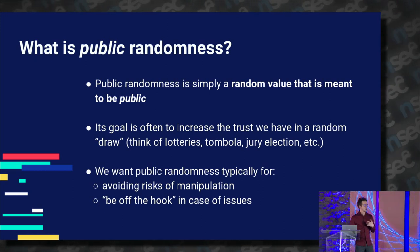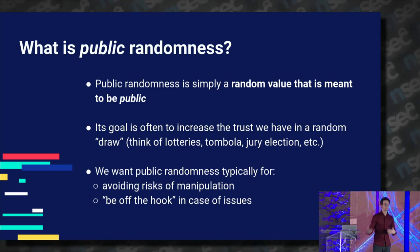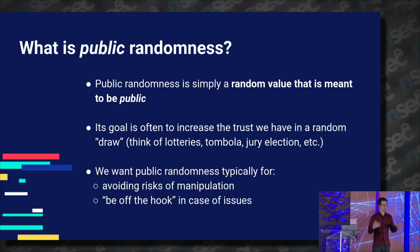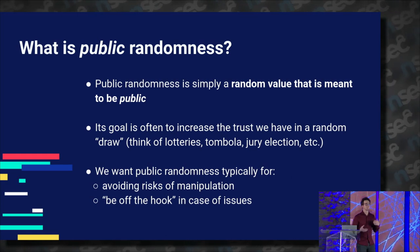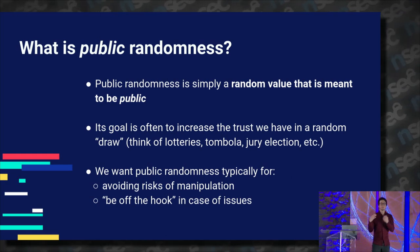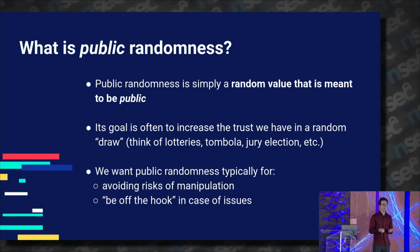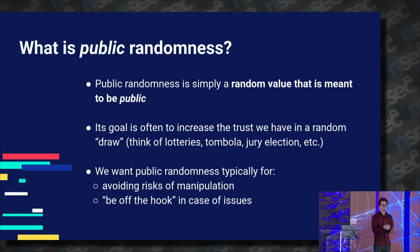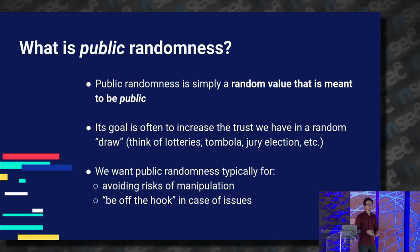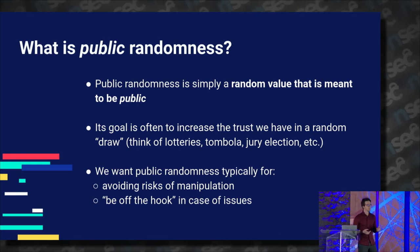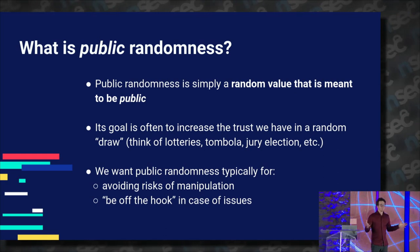My talk is about public verifiable distributed randomness. Public randomness is basically just a value that is random but is meant to be public. Think of lotteries: you buy a ticket, choose your numbers, and at some point they draw the winning ticket by drawing a random value — and that random value is public. Anybody can look it up and say, oh, that's the winning number for today's lottery. That's really what public randomness is about.